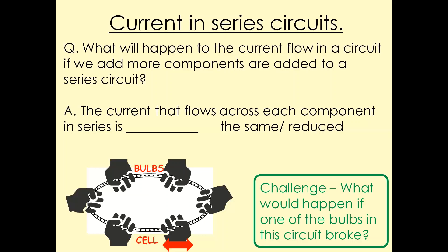Remember this statement: in a series circuit, the current remains the same and the voltage is shared. That's really important — that's what we want to take home from this topic and what will be the exam question. If there are five amps of current flowing in the circuit, each bulb or component will receive five amps. But the voltage is shared among the components.